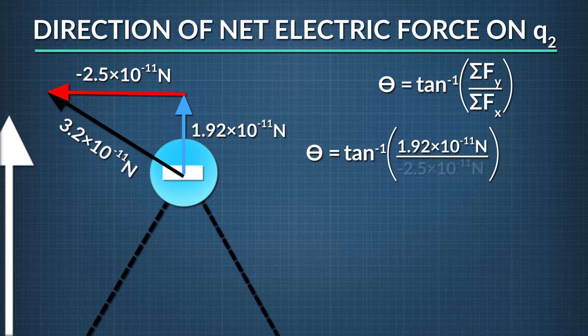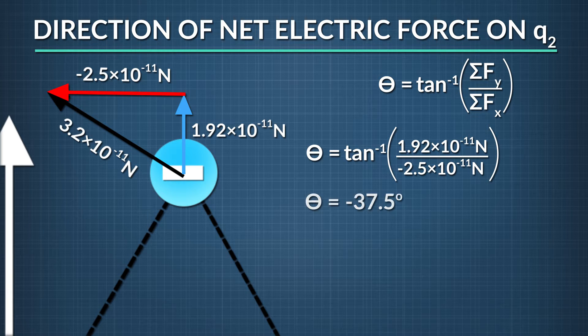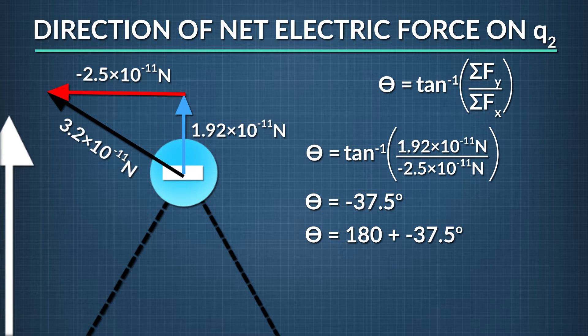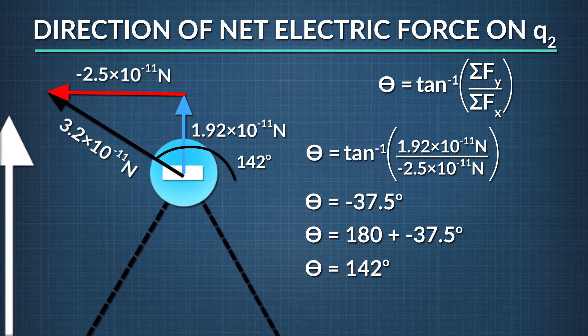Divided by the sum of the x components, which is negative 2.5 times 10 to the negative eleventh newtons. The result we find is negative 37.5 degrees, but since the angle lies in the second quadrant, we'll add 180 degrees to that result. 180 degrees plus negative 37.5 degrees equals 142 degrees with respect to the positive x axis.